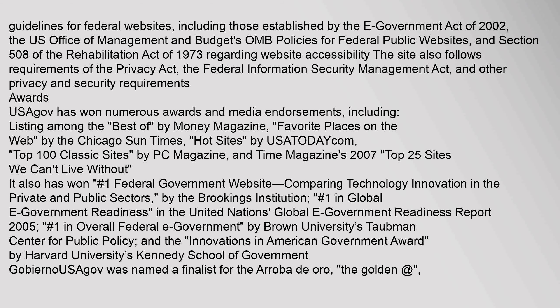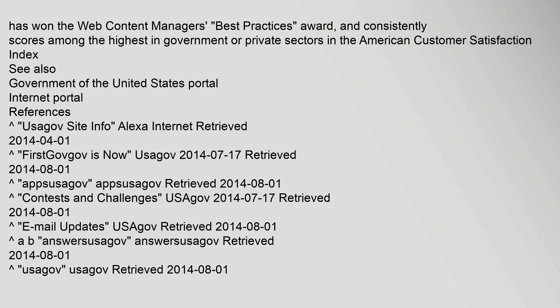Awards: USAGov has won numerous awards and media endorsements, including listing among the Best Of by Money Magazine, Favorite Places on the Web by the Chicago Sun-Times, Hot Sites by USAToday.com, Top 100 Classic Sites by PC Magazine, and Time Magazine's 2007 Top 25 Sites We Can't Live Without. It has also won No. 1 Federal Government Website for Comparing Technology Innovation in the Private and Public Sectors by The Brookings Institution, No. 1 in Global E-Government Readiness in the United Nations Global E-Government Readiness Report 2005, No. 1 in Overall Federal E-Government by Brown University's Taubman Center for Public Policy, and the Innovations in American Government Award by Harvard University's Kennedy School of Government. GobiernoSiGov was named a finalist for the Arroba de Oro (the Golden @), has won the Web Content Manager's Best Practices Award, and consistently scores among the highest in government or private sectors in the American Customer Satisfaction Index.